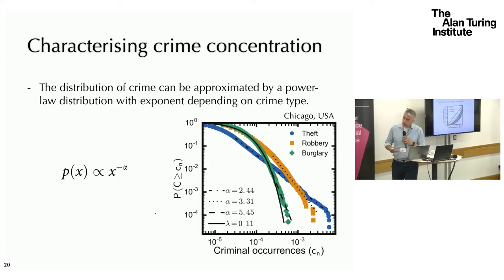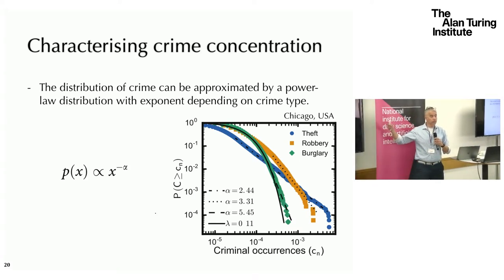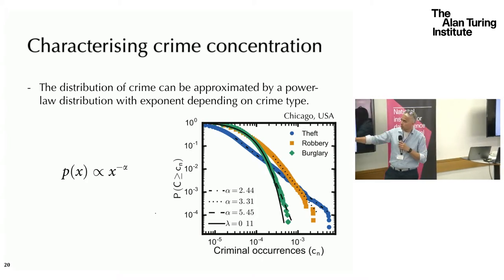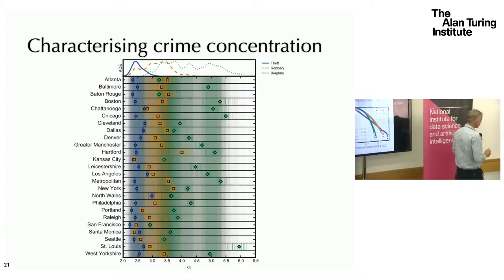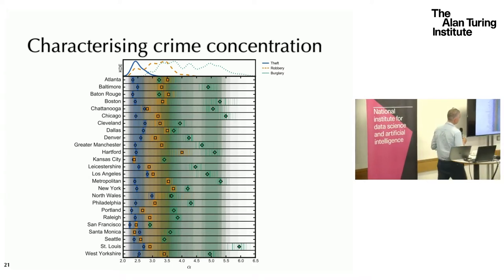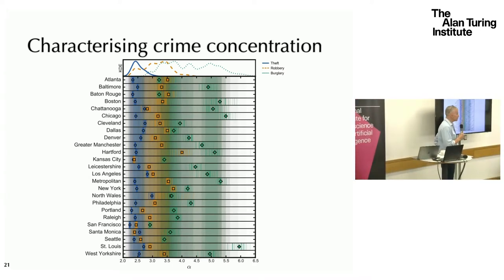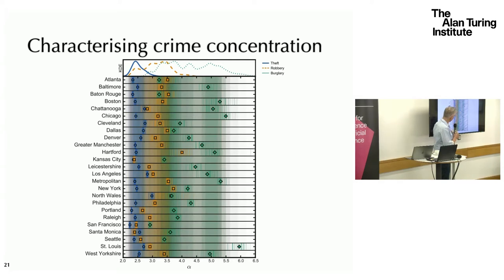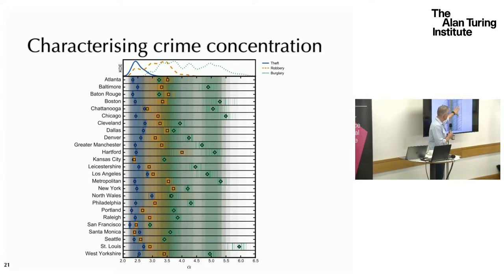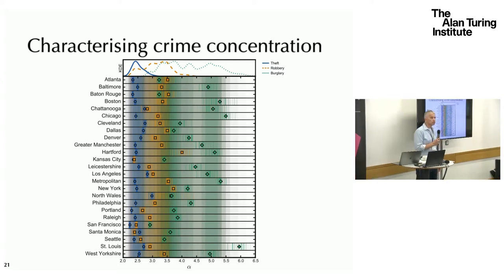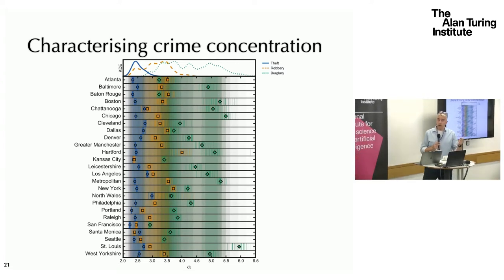We can also look at the probability of a particular location having an event and use an exponent to characterize that. If we put this as some sort of kernel density estimation of that exponent, you can see that consistently the exponent for theft is in one region, for robberies it's in another, and it's less organized for robbery. So there is a clear concentration on theft. The point is that with that, we start seeing similarities — we can say, for instance, that San Francisco is perhaps similar to Seattle.